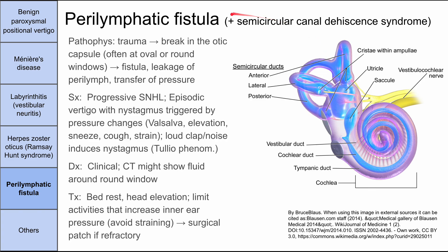Next is perilymphatic fistula, and I'll also mention semicircular canal dehiscence syndrome since the pathophysiology is similar. Trauma breaks the otic capsule — the bony outer shell of the inner ear — creating a fistula and leakage of perilymph, transferring pressure to the outside. It often breaks at the oval and round windows, though semicircular canal dehiscence is a break in the semicircular canals. Symptoms include progressive sensorineural hearing loss and episodic vertigo and nystagmus triggered by pressure changes such as Valsalva, sneezing, coughing, or straining.